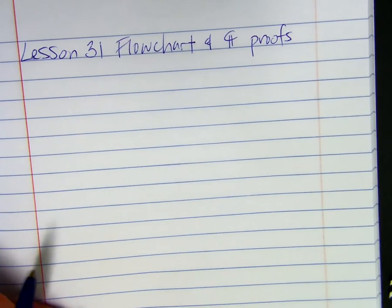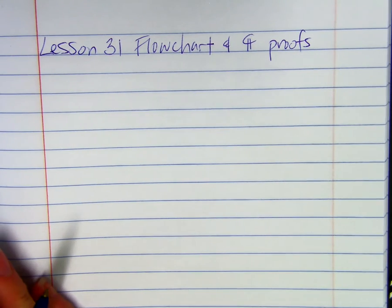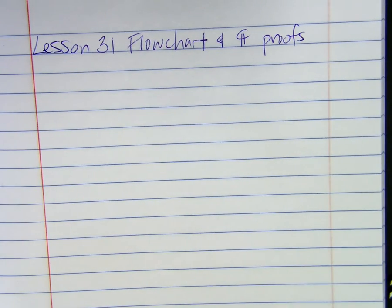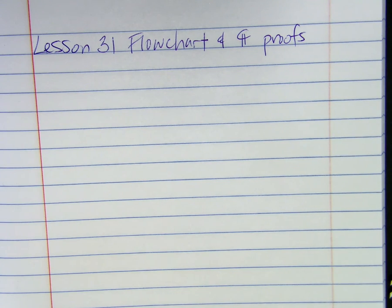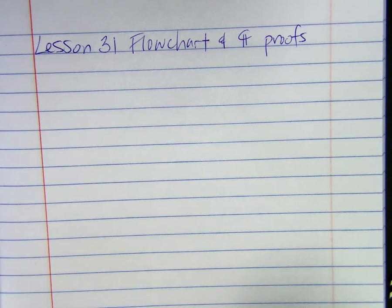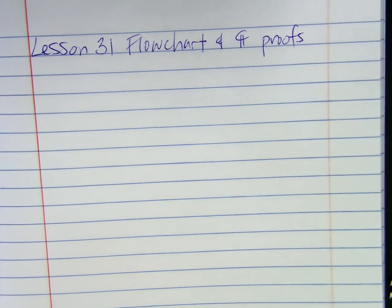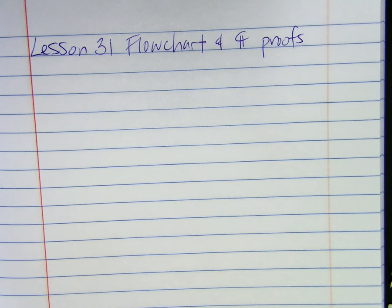A flowchart proof uses boxes and arrows to show the flow or structure of the proof. You want to read it left to right and top to bottom. It's another form of the two-column proof where you can do two steps simultaneously.